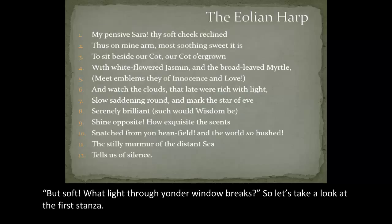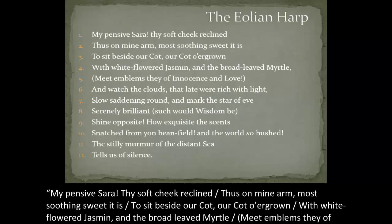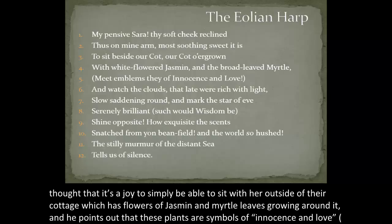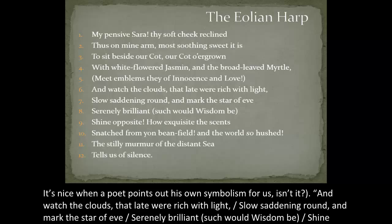Let's take a look at the first stanza. Coleridge, as the speaker, is addressing his wife Sarah in this stanza. The word 'pensive' means to be engaged in serious thought. In these first five lines, Coleridge is saying to his wife, who is deep in thought, that it's a joy to simply be able to sit with her outside their cottage, which has jasmine and myrtle leaves growing around it. He points out that these plants are symbols of innocence and love — it's kind of nice when a poet points out his own symbolism for us.